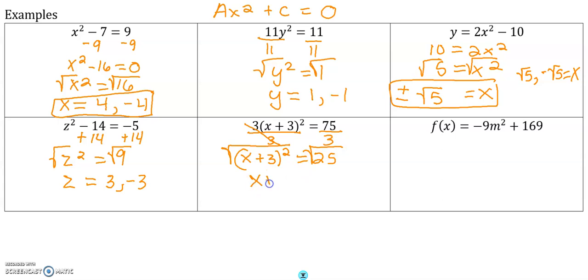We'll get x + 3 equals the square root of 25 is 5, or it could be minus 5. So I'm going to write down 2 equations for that one, and then continue to solve.